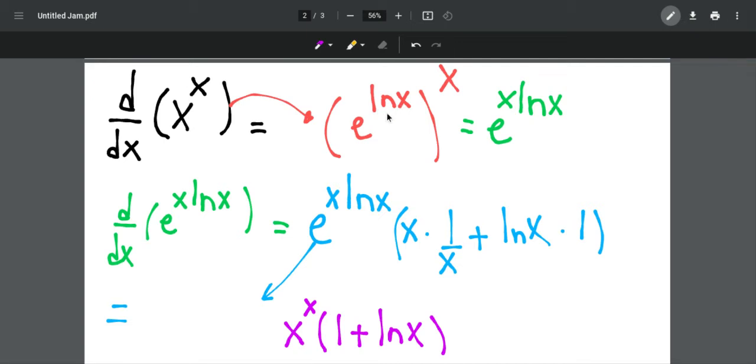So we get e to the power of ln x to the power of x, and if we use the power multiplication rule, we should multiply x, so we get e to the power of x times ln x.